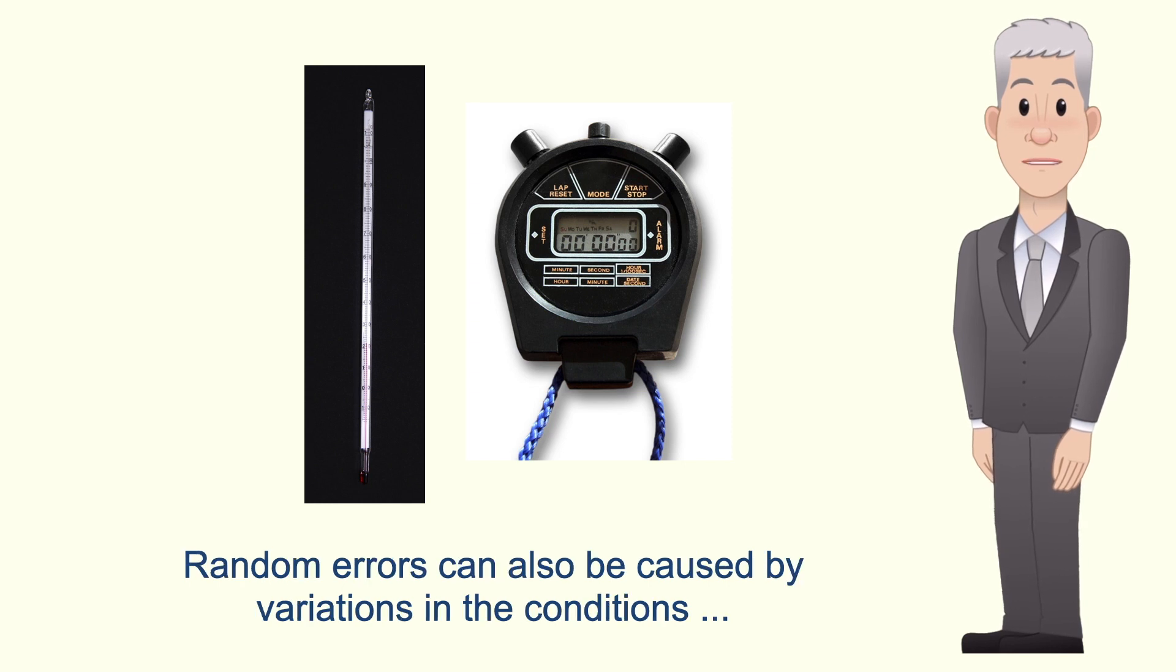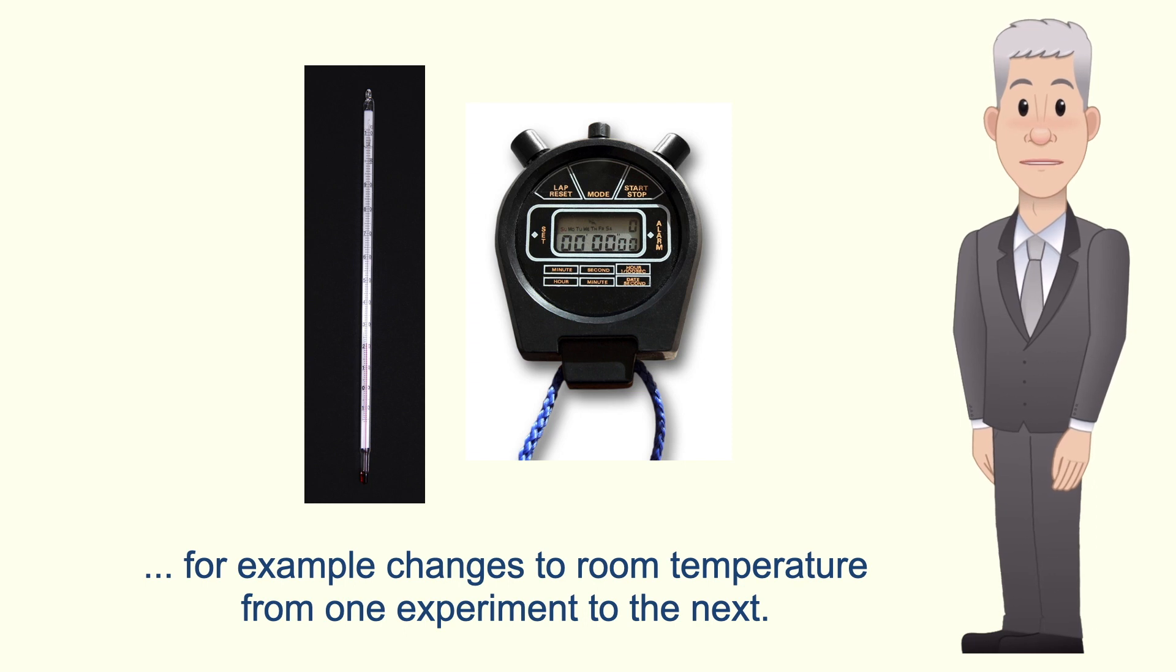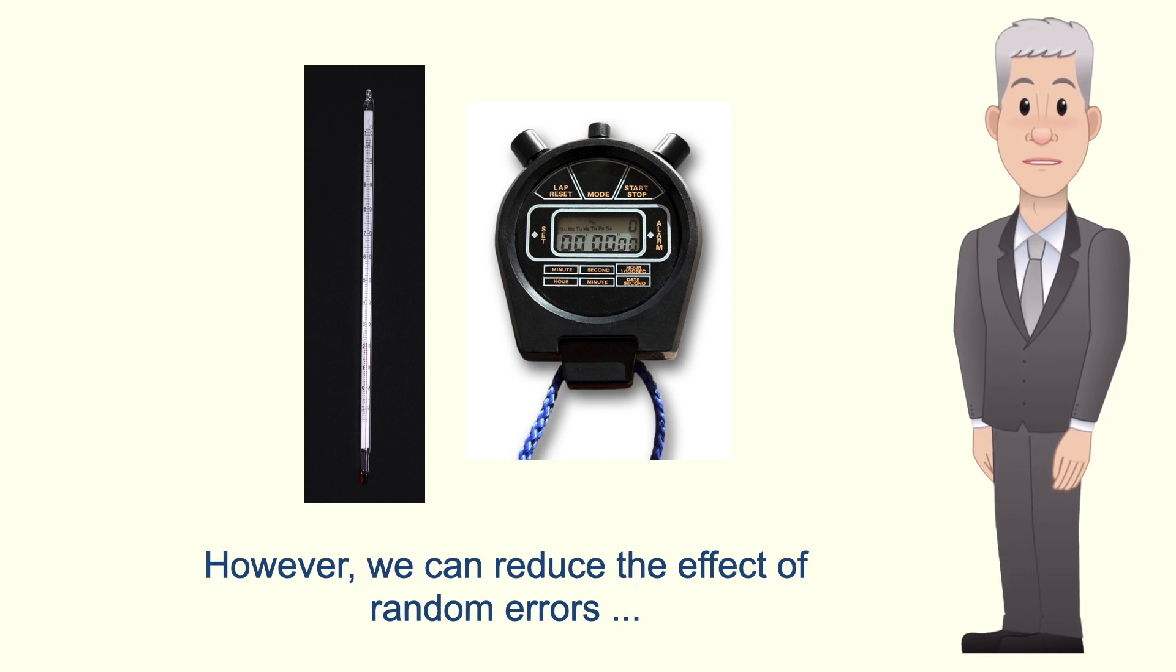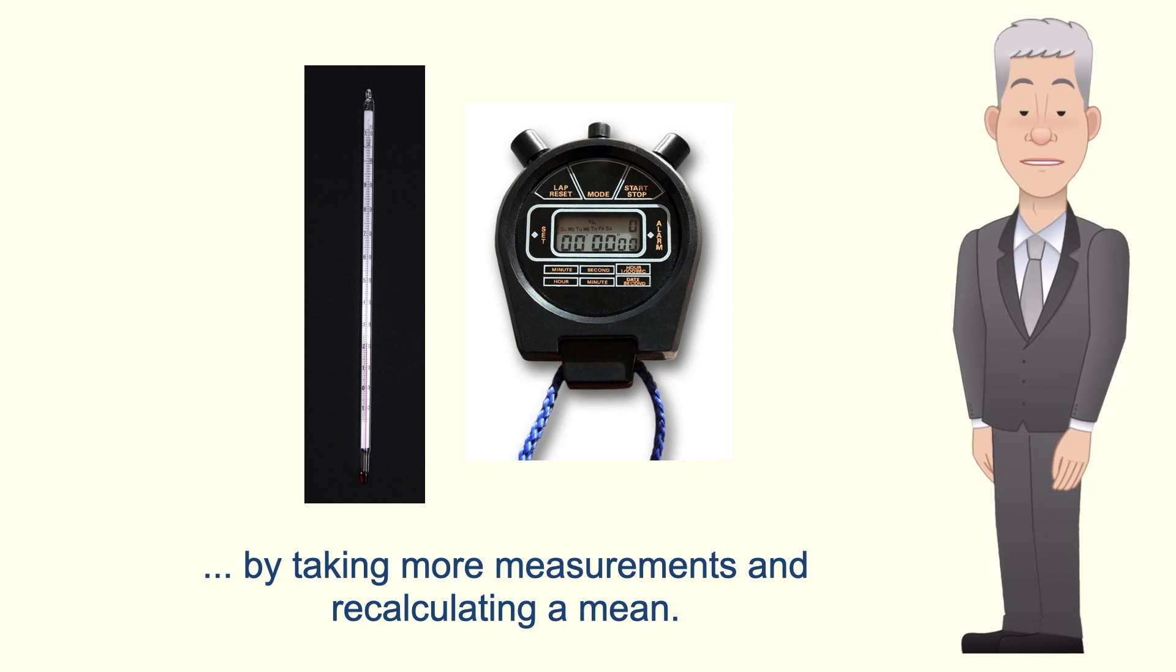Random errors can also be caused by variations in the conditions. For example, changes to room temperature from one experiment to the next. Now we cannot eliminate random errors. However, we can reduce the effect of random errors by taking more measurements and recalculating a mean.